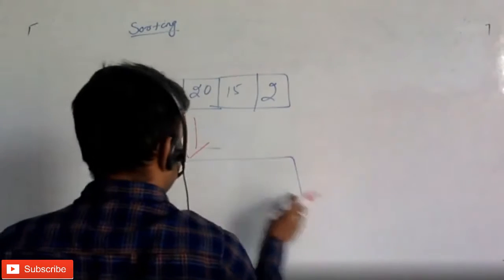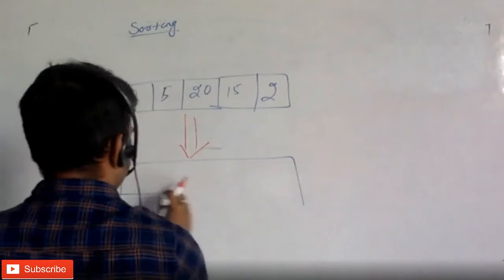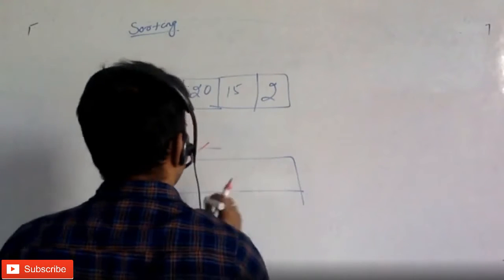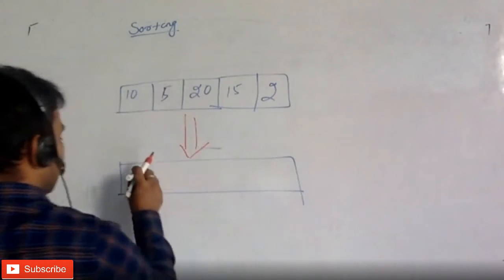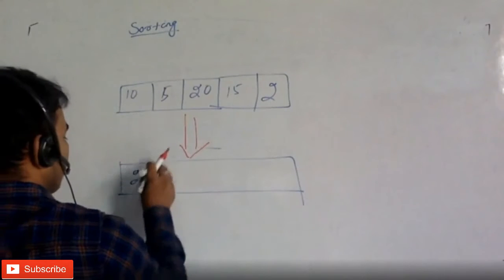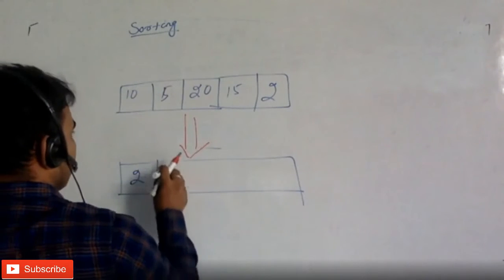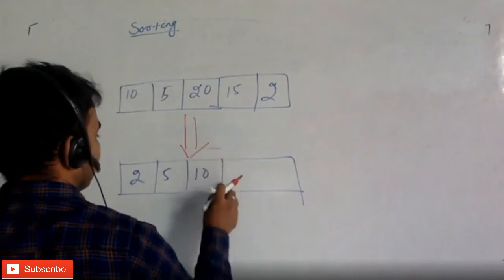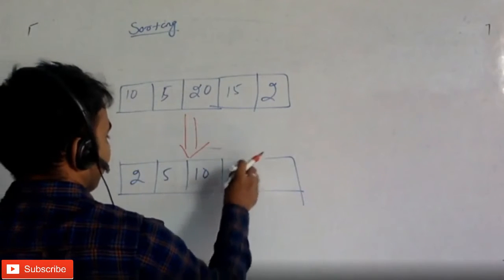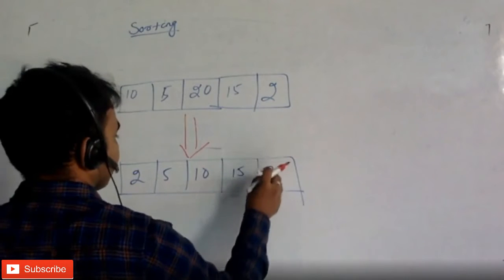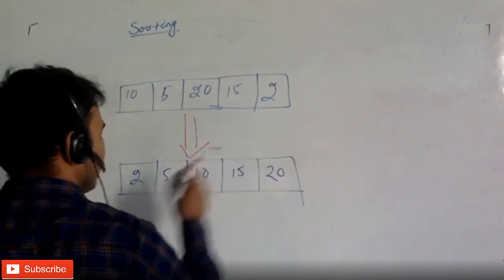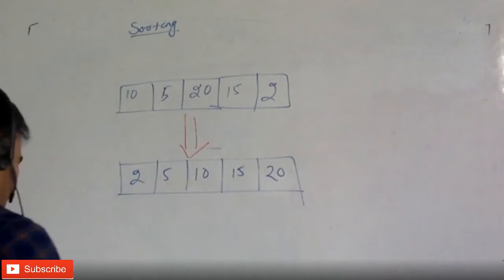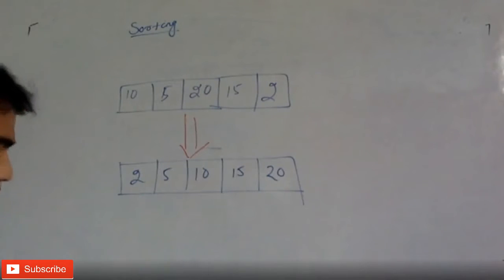So that means after this, the output you are expecting is 2, 5, 10, 15, 20. This is the sorting result.